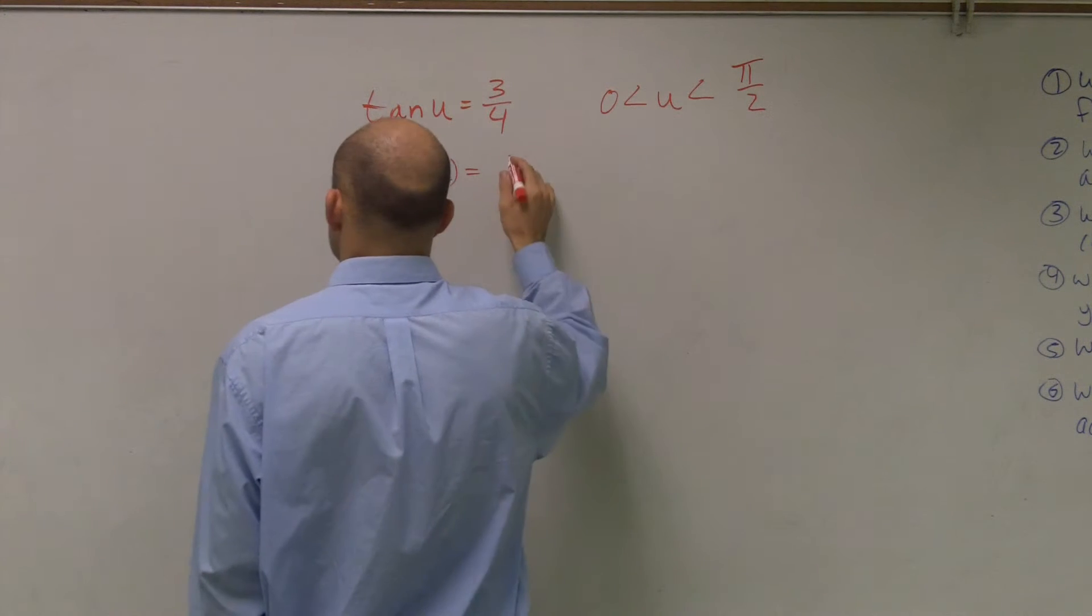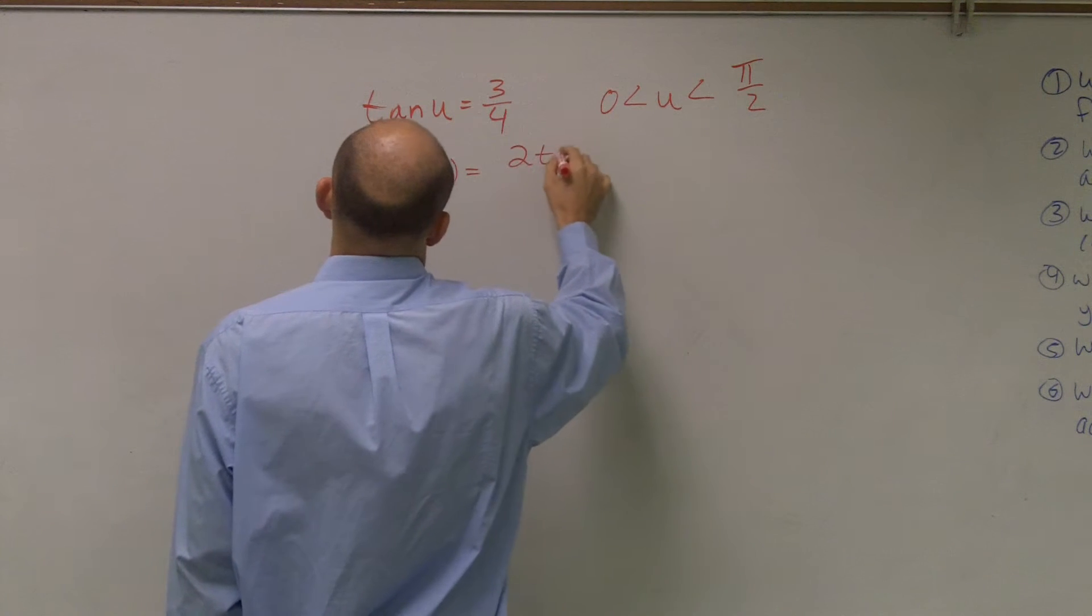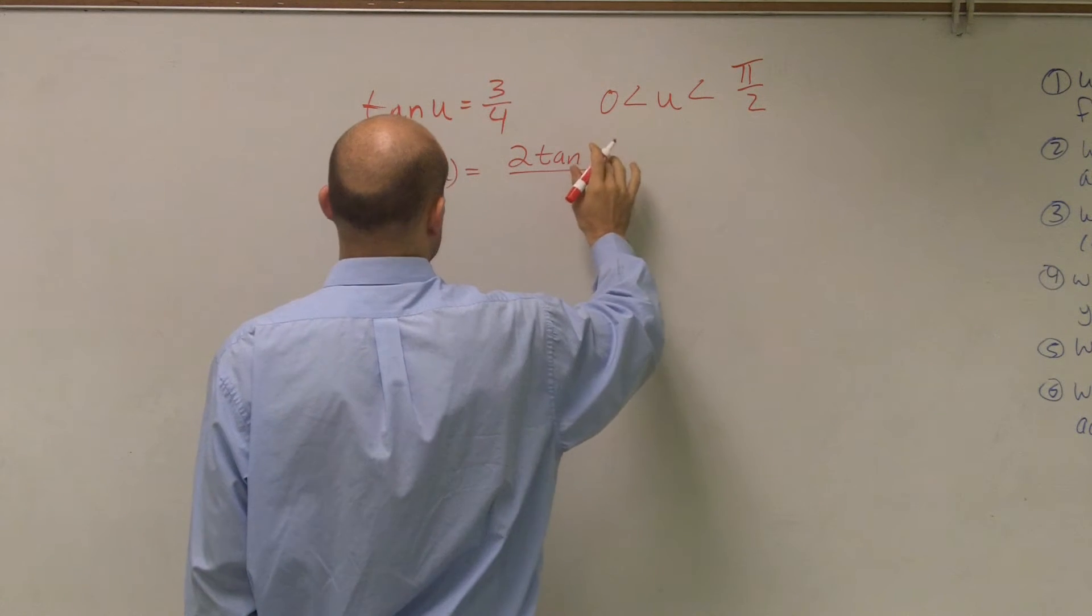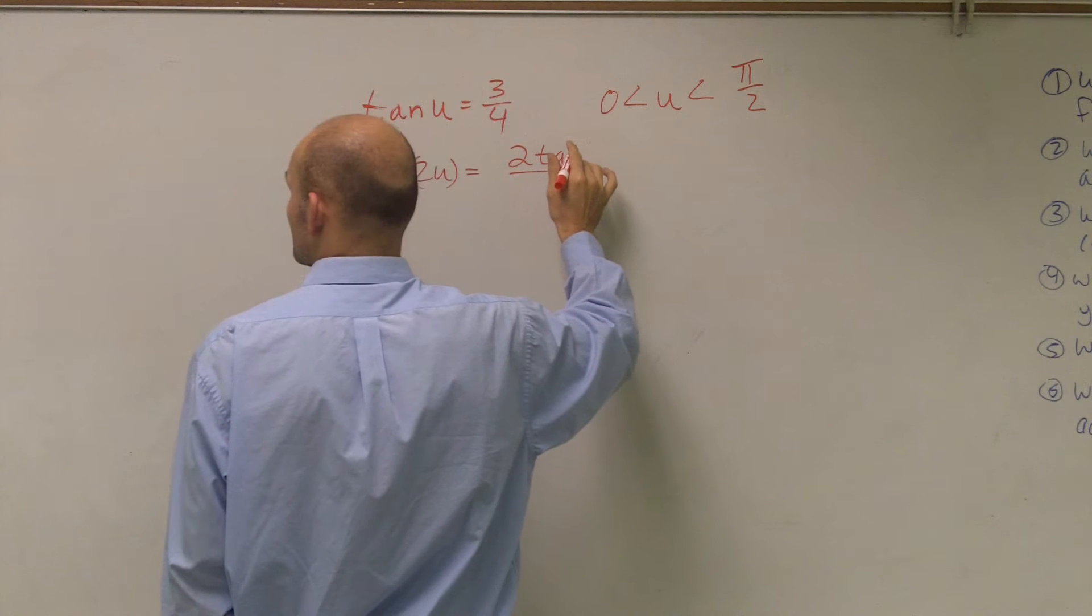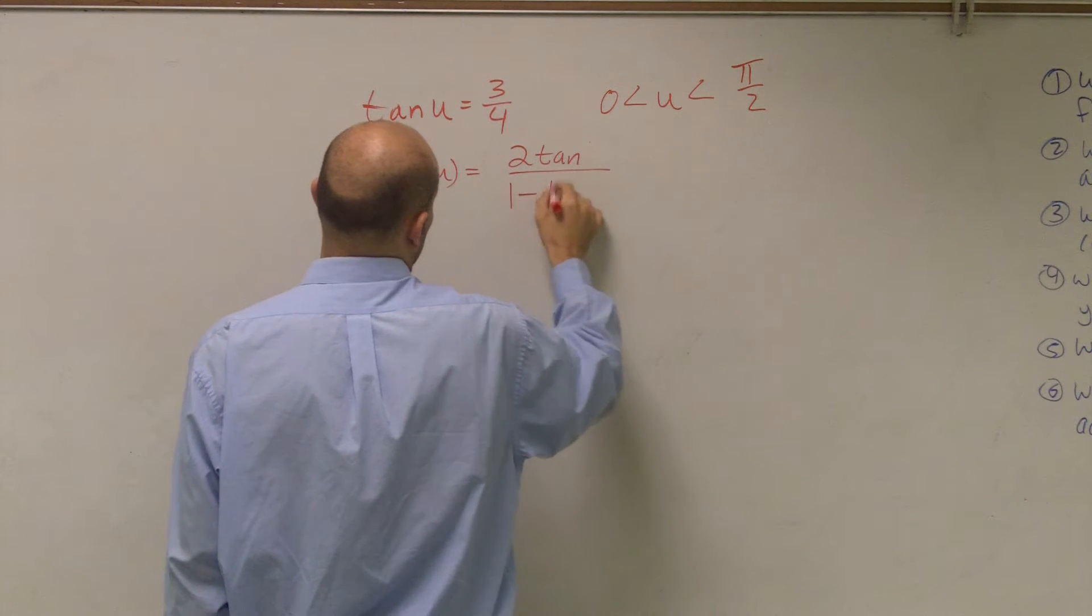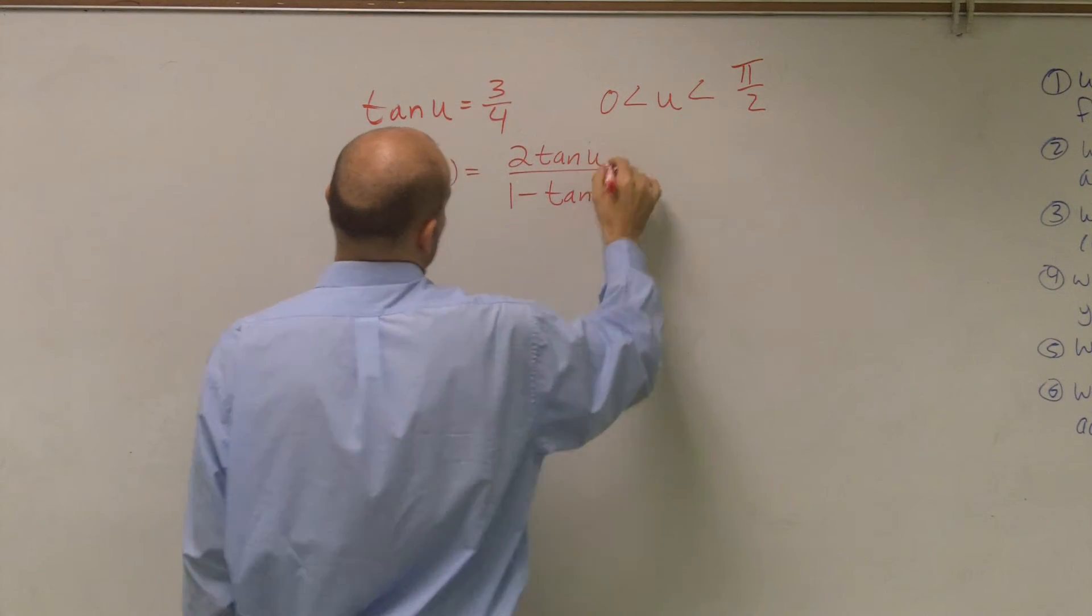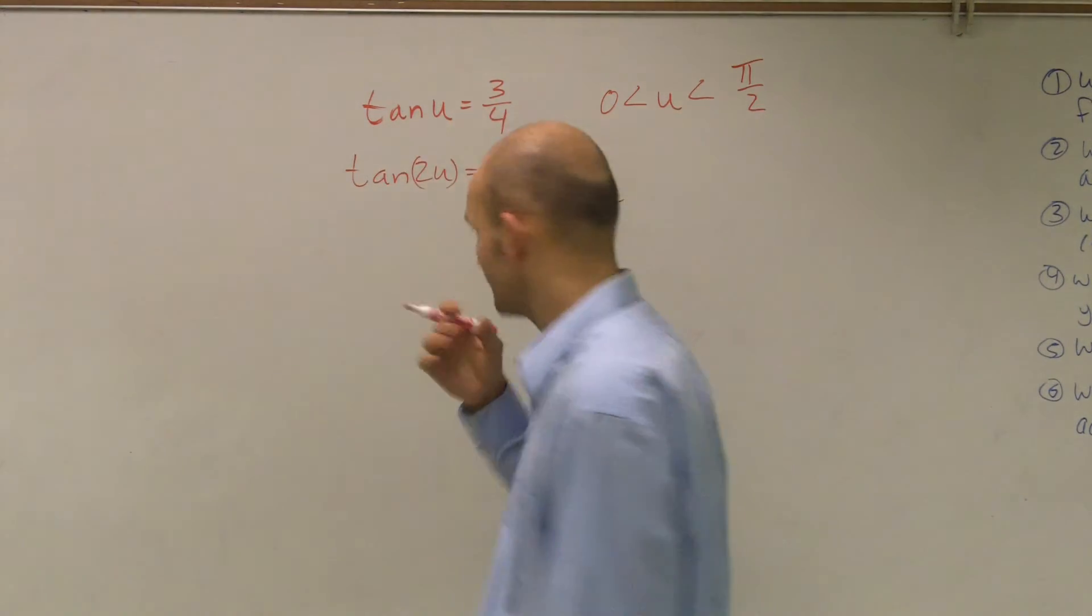The double angle formula for tangent is 2 tangent of u over 1 minus tangent squared of u. Let me just double check that. Yeah, all right.